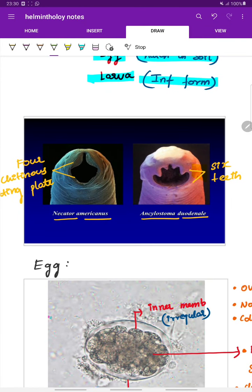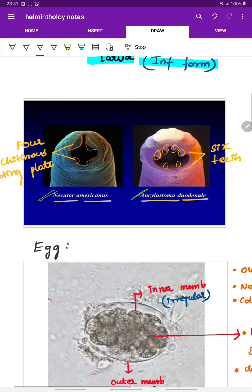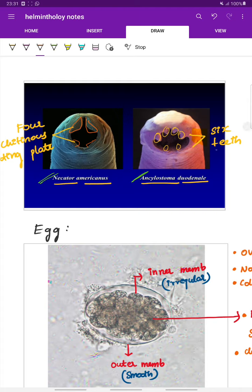This is the difference between the Necator americanus and the Ankylostoma duodenale. The Necator americanus is the new world hookworm whereas Ankylostoma duodenale is the old world hookworm. In Ankylostoma duodenale it has six teeth, whereas the Necator americanus has four chitinous plates. The Ankylostoma duodenale causes more severe iron deficiency anemia because of these teeth.